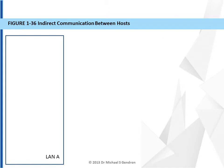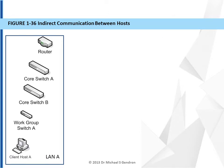First, we present LAN A. Local Area Network A has a client host, a number of switches, and an edge router. Those devices are connected together by some type of media. It does not matter what that media is at this point. However, you must know that these devices are connected together wirelessly or via some type of wired media.